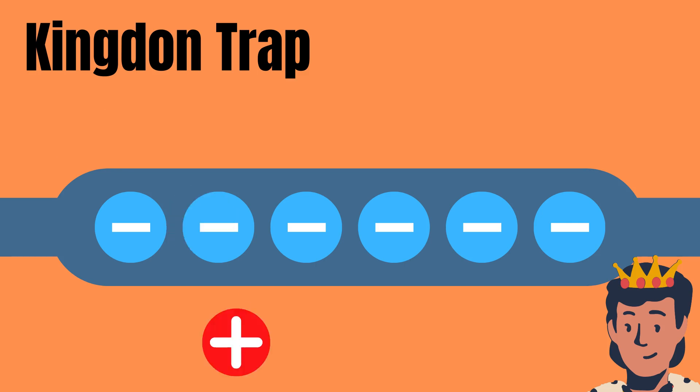This is called a kingdom trap and works by giving this rod an electrical charge which is opposite of the ion to be analyzed.